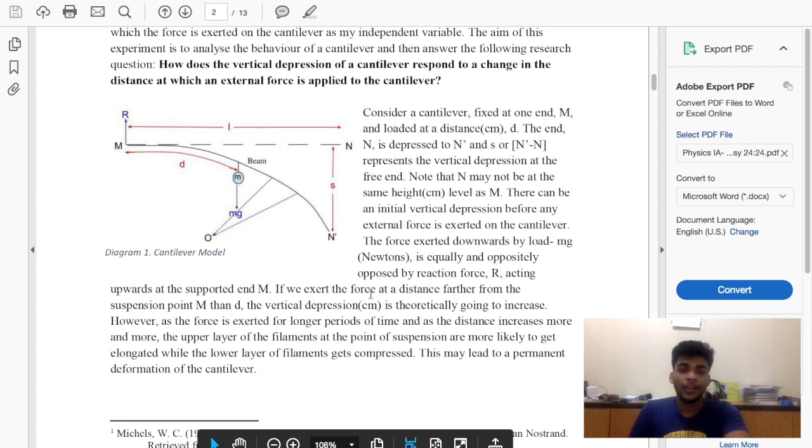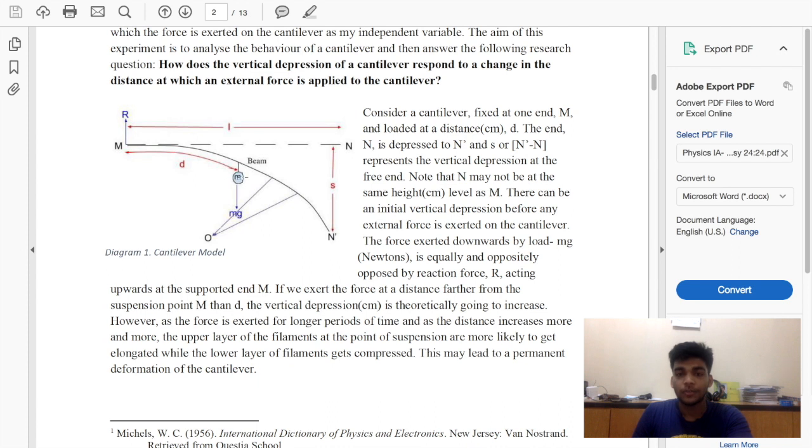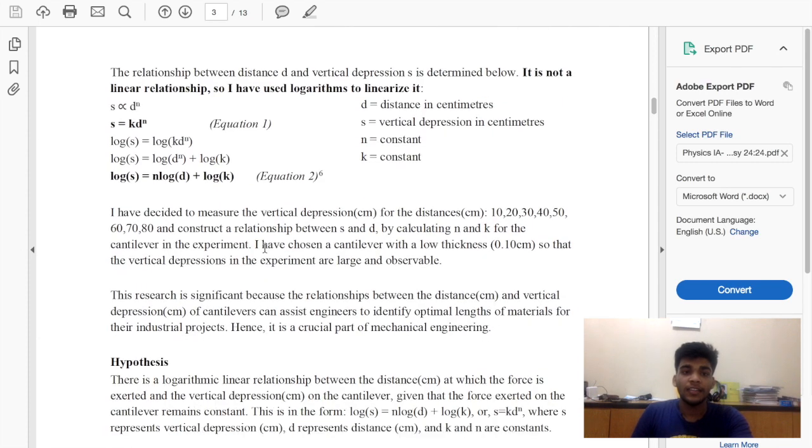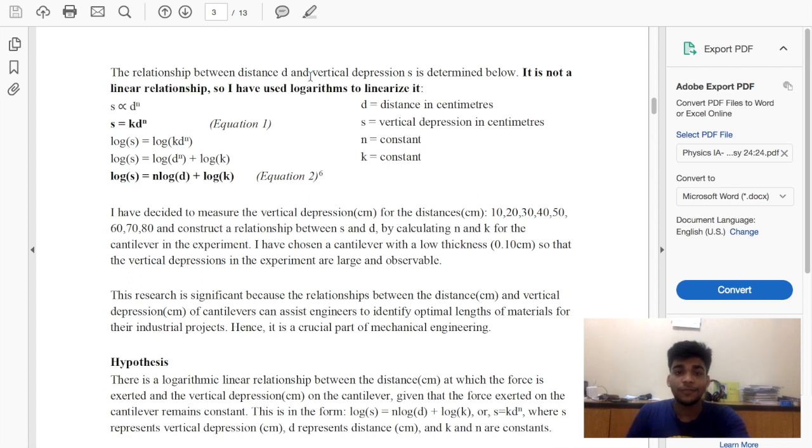I kind of explained the theory over here, how it would dip, how there would be depression. If you put this mass further along somewhere over here, the depression should be higher, etc. I did a lot of research. As you can see, there's citations over here in the introduction. And the relationship between distance and vertical depression is determined below.